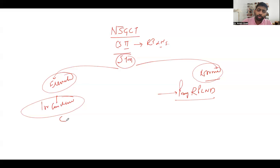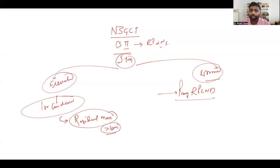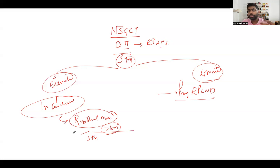Suppose you start the patient on first-line chemotherapy because markers were elevated. After completing three cycles of BEP, you do a follow-up CT scan to check for any residual mass. If a residual mass is found and it is significant in size — more than one centimeter for a non-seminomatous tumor — your concern is to get a tumor marker again, to rule out systemic disease or micrometastasis.